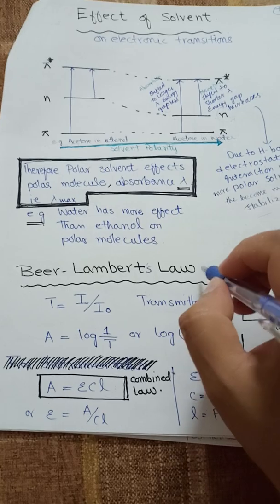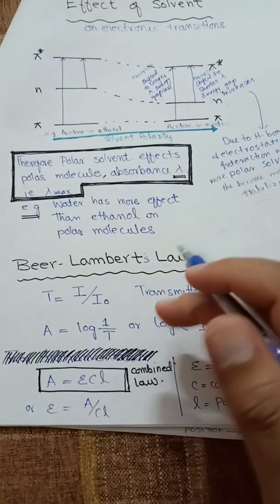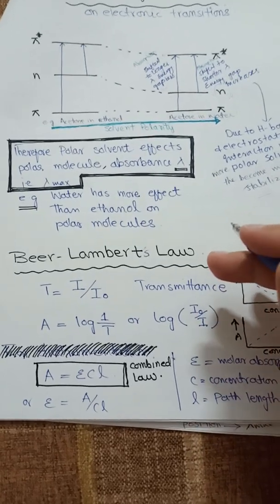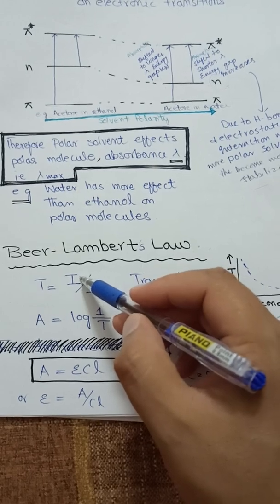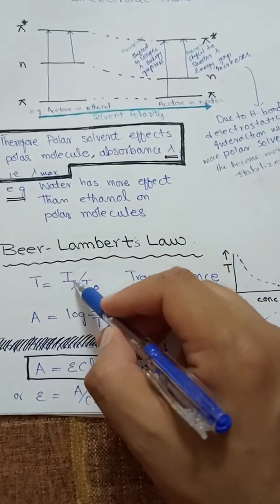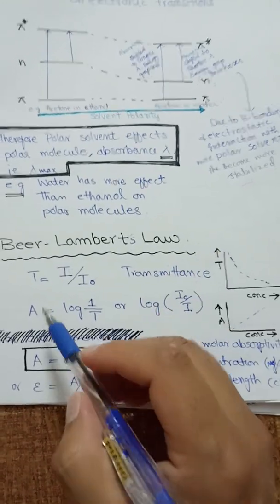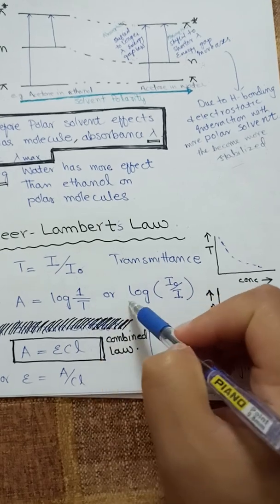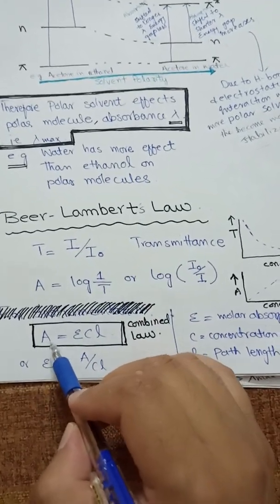Beer-Lambert's Law is a combined form of Beer's Law and Lambert's Law, through which we can measure the absorbance of different substances. Transmittance (T) is the intensity of transmitted light divided by the intensity of incident light. Absorbance is the inverse of transmittance: A = log(1/T) = log(I₀/I).